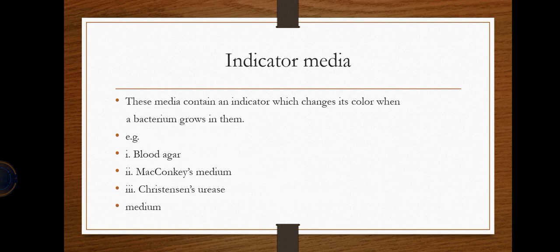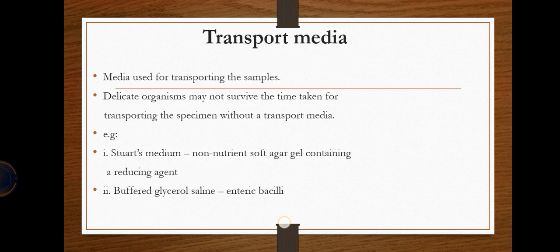Indicator media contain ingredients that act as indicators — the color of the media changes when bacteria grow in it. Examples include blood agar, MacConkey's media, and Christensen's urea media.